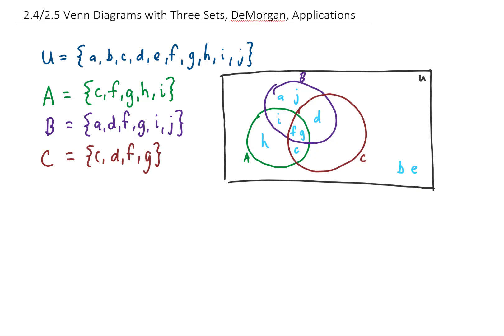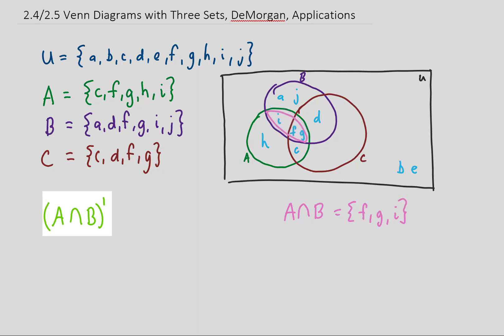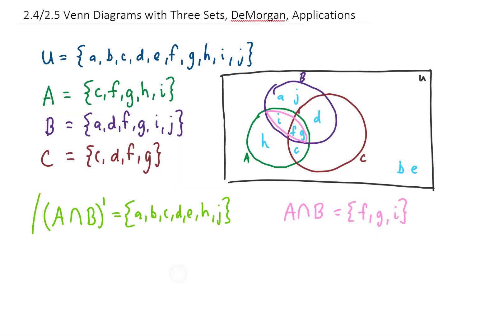Now using these values, let's do a couple of examples. Let's find A intersected with B complement. To do that, we might want to find A intersected with B first. A intersected with B is this region right in here, and that includes elements F, G, and I. Now back to the original question, A intersected with B complement is going to be everything other than F, G, and I.